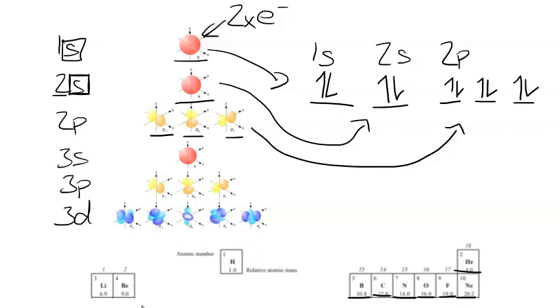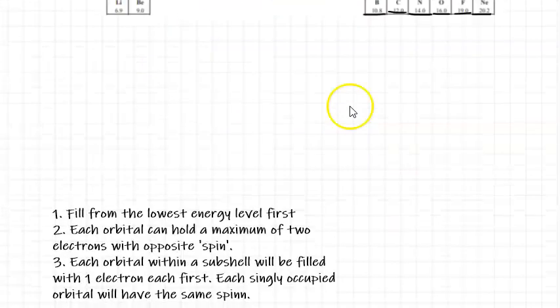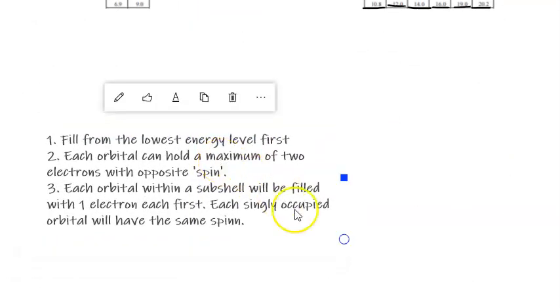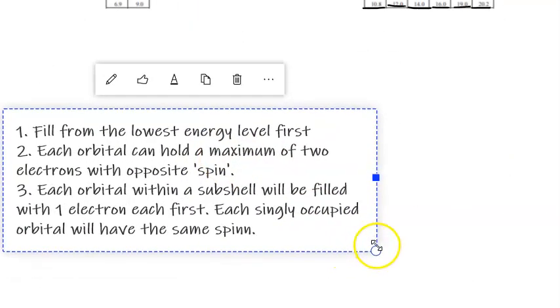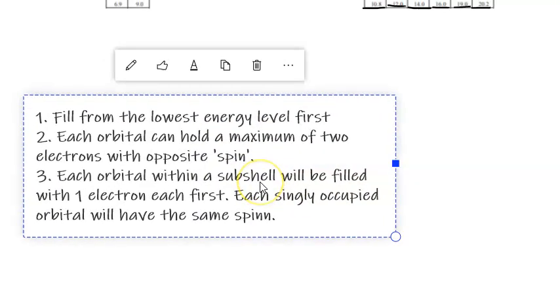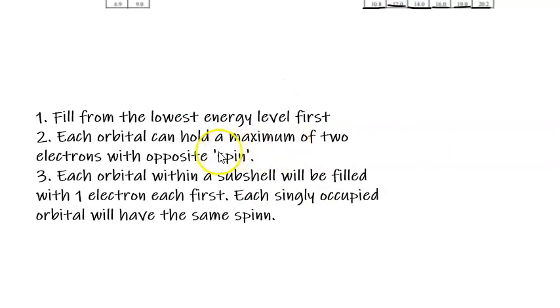So let's have a look at what the rules are that state how we would do this. This would be the electron configuration showing the electron spin of neon. So the rules are that we need to fill from the lowest energy level first. That's what we already know. We're going from 1s to 2s to 2p. Then each orbital can hold a maximum of two electrons with opposite spin. So that's us showing that we do one electron first with one spin, and then the other electron showing the other spin.